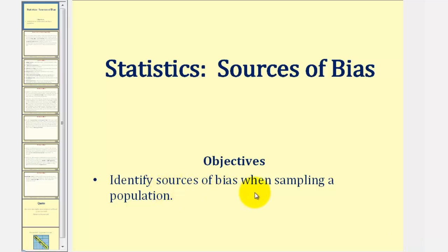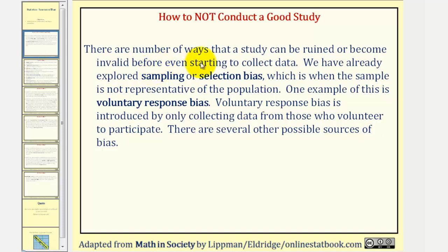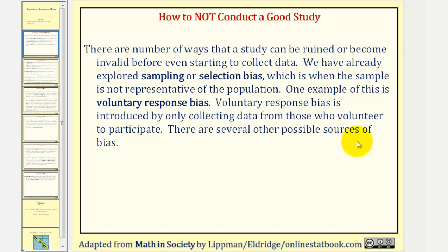Welcome to a lesson on the sources of bias when sampling a population. There are a number of ways that a study can be ruined or become invalid before even starting to collect data. We've already explored sampling or selection bias, which is when the sample is not representative of the population. One example of this is voluntary response bias, where bias is introduced by only collecting data from those who volunteer to participate.